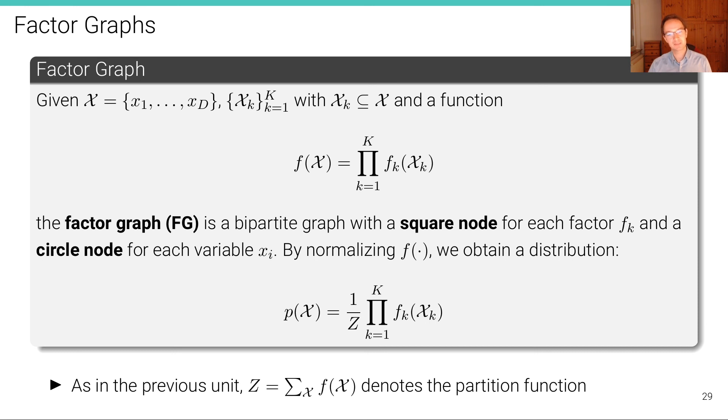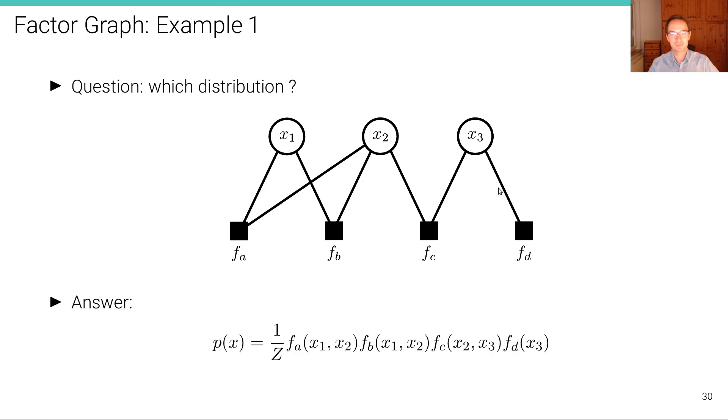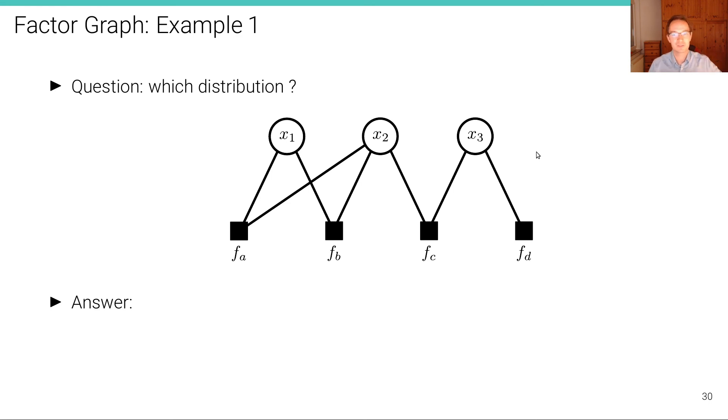And it's bipartite in the sense that there is no connection between factors and there is no connection between variables. All connections are between factors and variables, between different types of variables. So we can transform this into a bipartite graph. Here's an example of such a graphical transformation into a bipartite graph, where on one side we have variables, on the other side we have the factors, and there's only connections going from the top to the bottom and not between variables and between factors. So that's why it's called a bipartite graph.